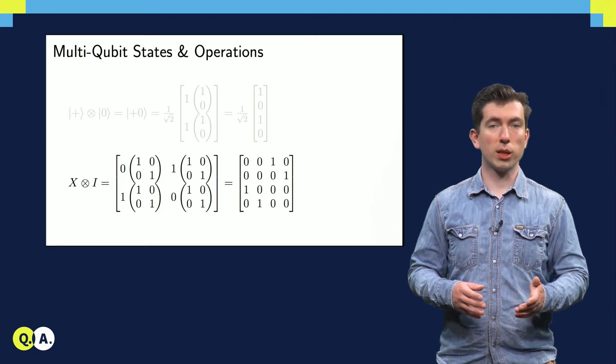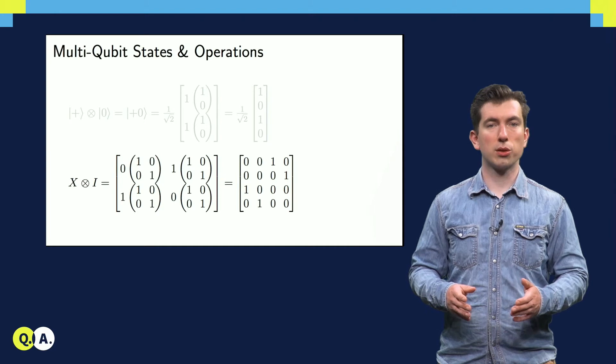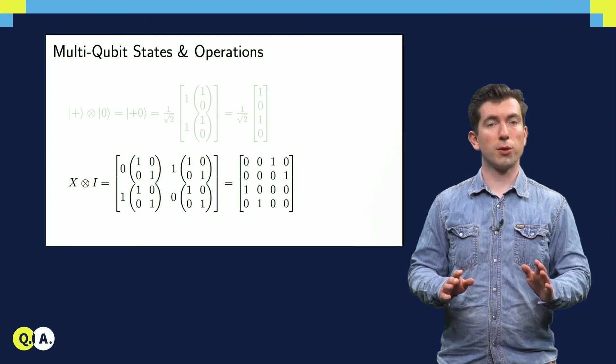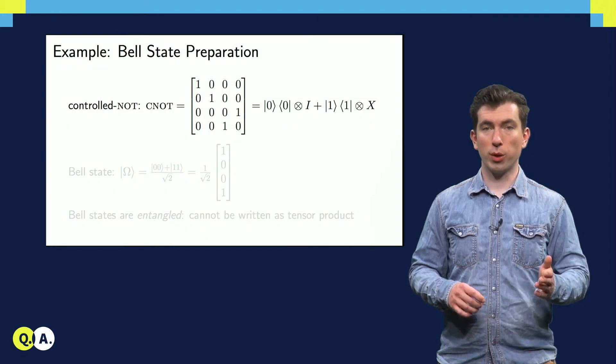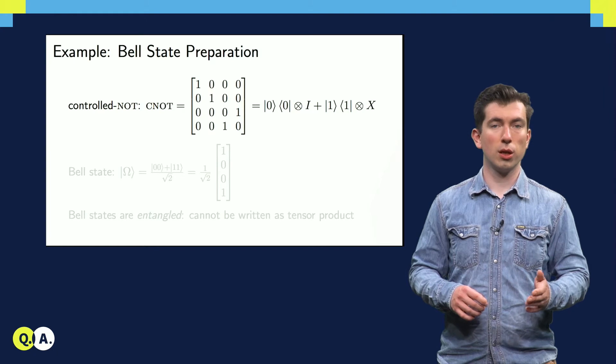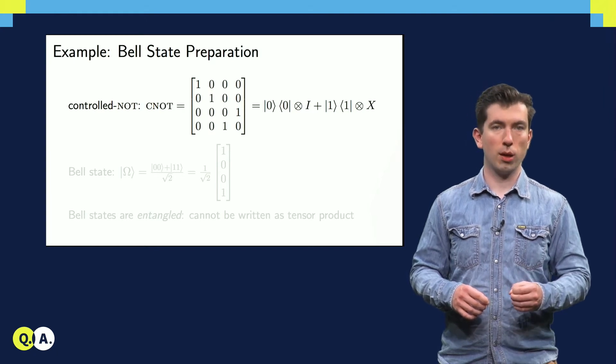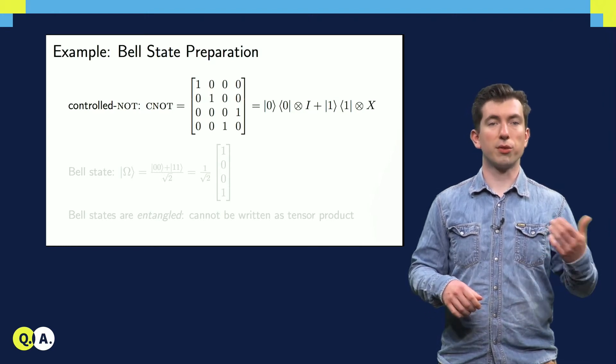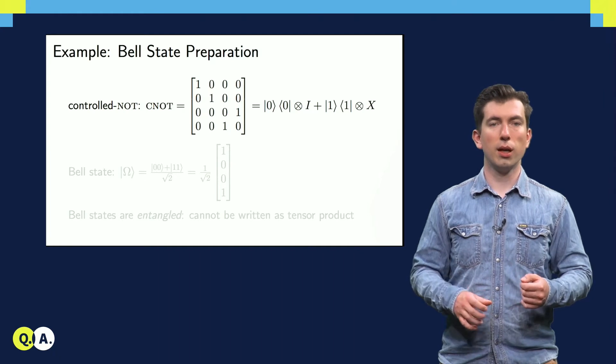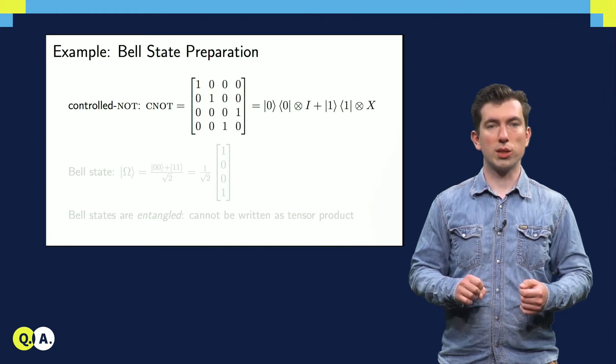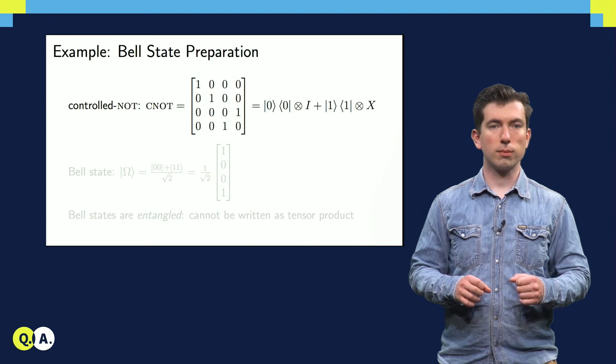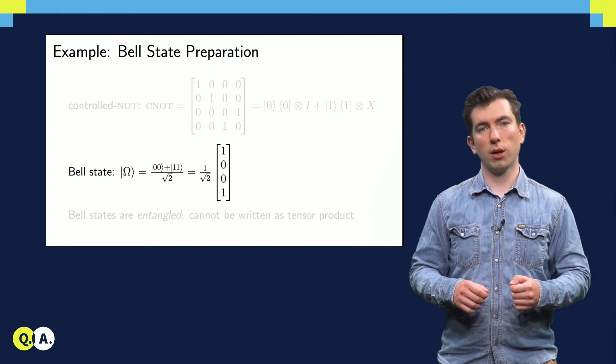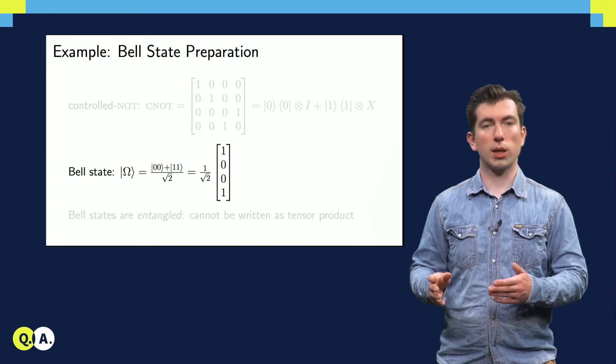Now that we've seen the basic formalism and notation, we're ready to calculate the results of a small sequence of quantum operations which prepares a Bell state. First, we introduce a two-qubit gate which cannot be written as a tensor product of one-qubit gates, the controlled NOT, or CNOT for short. As we can see, it can be decomposed into a sum of two tensor products that says if the first qubit is in the zero state, do the identity, and if the first qubit is in the one state, perform an x on the second qubit. Here we see the Bell state, which we're going to prepare using the CNOT.